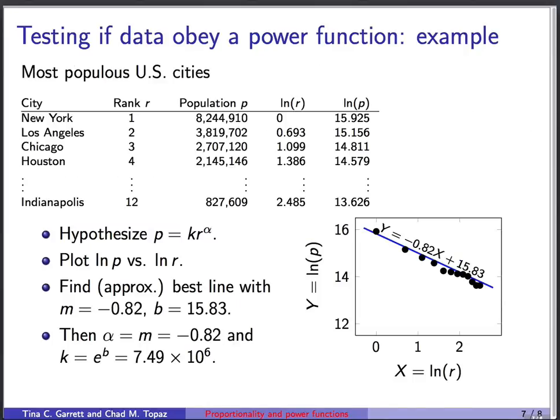And to make this extra concrete, we're going to do an example. So here's data for the most populous cities in the United States. New York is the most populous. It has rank one in that population list. And here's the population. Los Angeles is number two with just under four million and so on. So the first thing we might do is just hypothesize or ask, could this data obey a power law? Population equals a constant times the rank to some power.